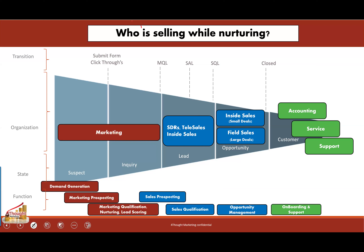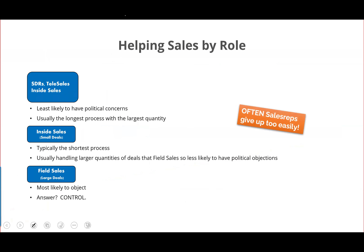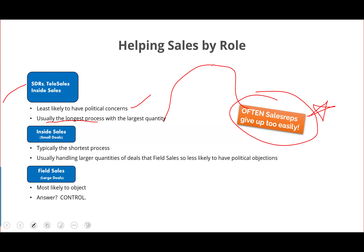How can we assist these particular roles while we're selling? From an early stage perspective, when talking about a sales development rep or telesales, these folks usually have the longest process — trying over and over to connect with someone they haven't reached. SDRs often give up too easily, which is why nurturing while selling may make a lot of sense. SDRs are least likely to have political concerns because they have a huge stack of leads and are only able to get through a small percentage of them. If you're also emailing while selling, that helps.